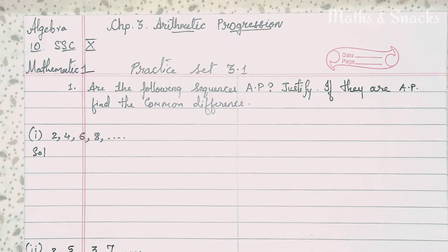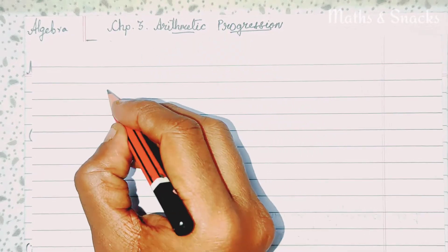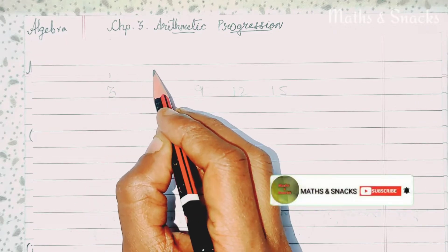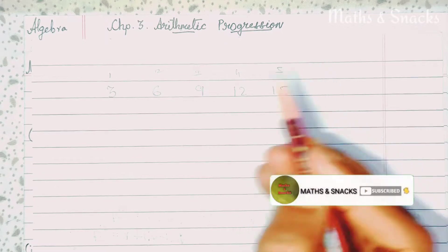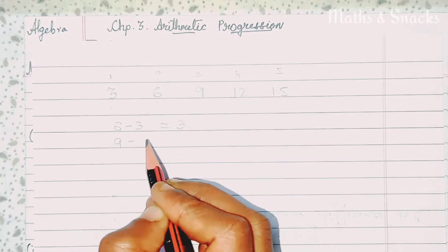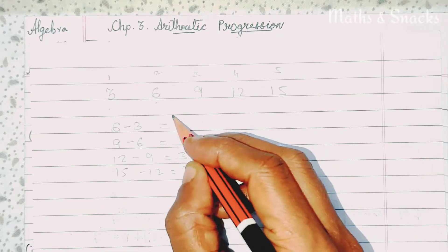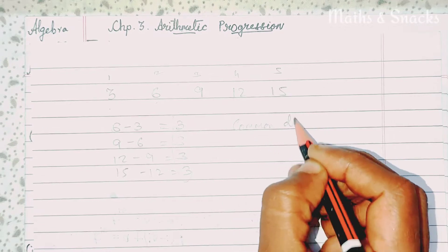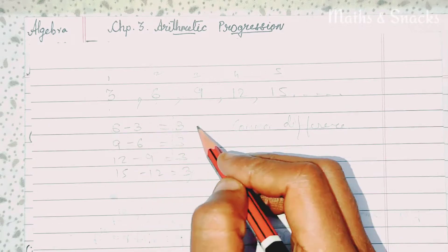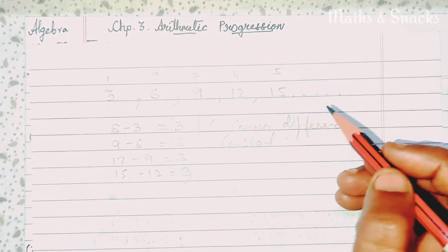For example, we have the 3 times table: 3, 6, 9, 12, 15. This is the first, second, third, fourth number. Back to back, each number is followed by the next. So 6 minus 3 = 3, 9 minus 6 = 3, 12 minus 9 = 3, 15 minus 12 = 3. Here 3 is the common difference. Whenever a sequence has a fixed common difference, that sequence is called an AP — arithmetic progression.